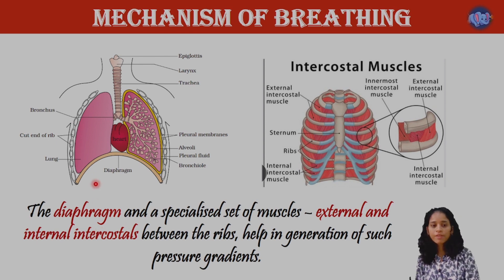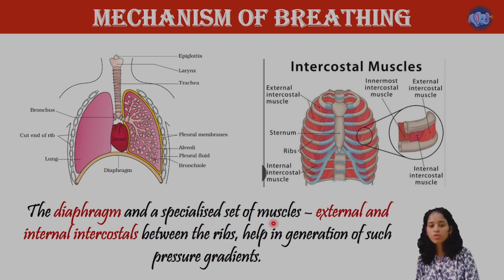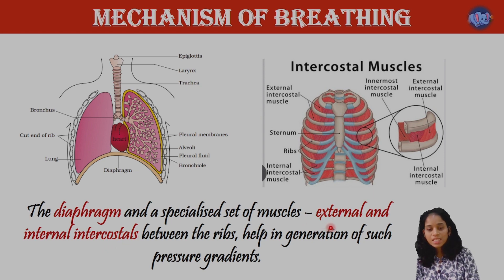The diaphragm is a dome-shaped structure. The lungs are in the lower chest region. There are specialized muscles called intercostal muscles — specifically external intercostals and internal intercostals — located between the ribs.